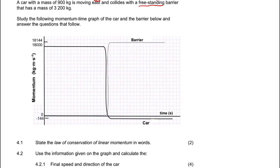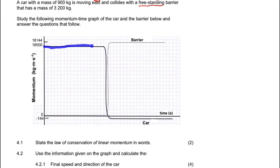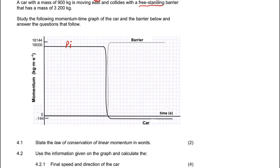Study the momentum-time graph of the car and the barrier. This graph consists of two objects. Unlike the previous video which had a velocity-time graph, this one is a momentum-time graph for two objects. The curve representing the car shows it initially moving with an initial momentum of 18,000. At the time of collision, the momentum decreased from 18,000 to negative 144, meaning the car changed direction. This negative 144 is the final momentum of the car.